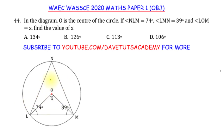First, we need to understand a few things. We are seeing a triangle inscribed in a circle, so we can use the properties of triangles and circle theorems to solve this effectively. If we can get angle LNM, we can use circle theorems to find X, because X will be twice that angle — according to the theorem that the angle subtended by arc LM at the center is twice that subtended at the circumference.